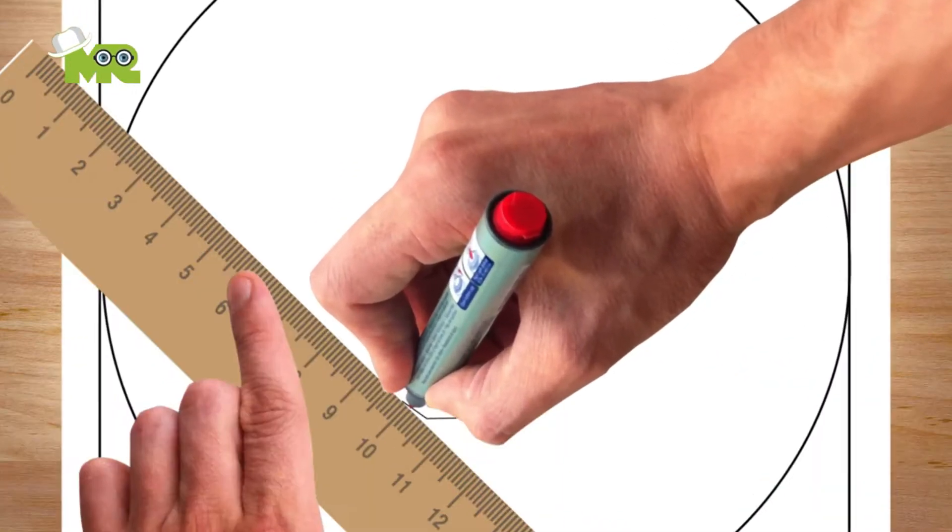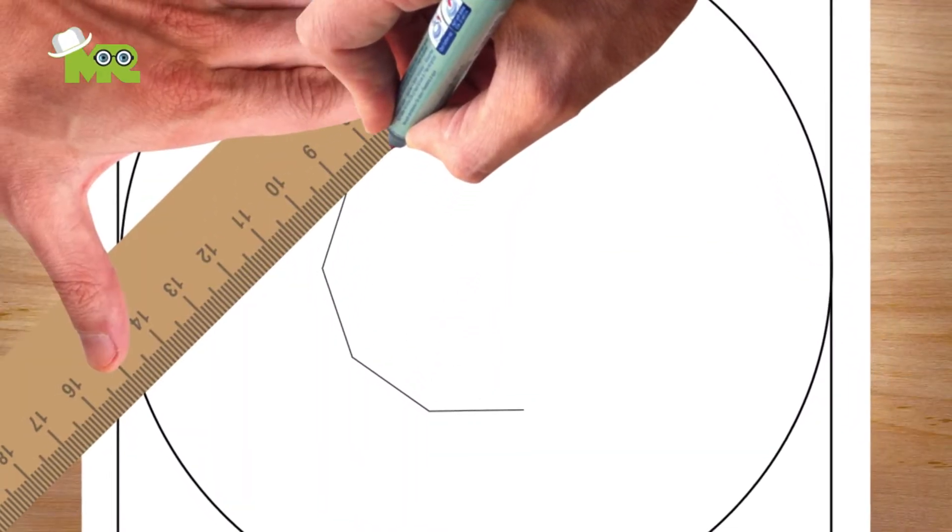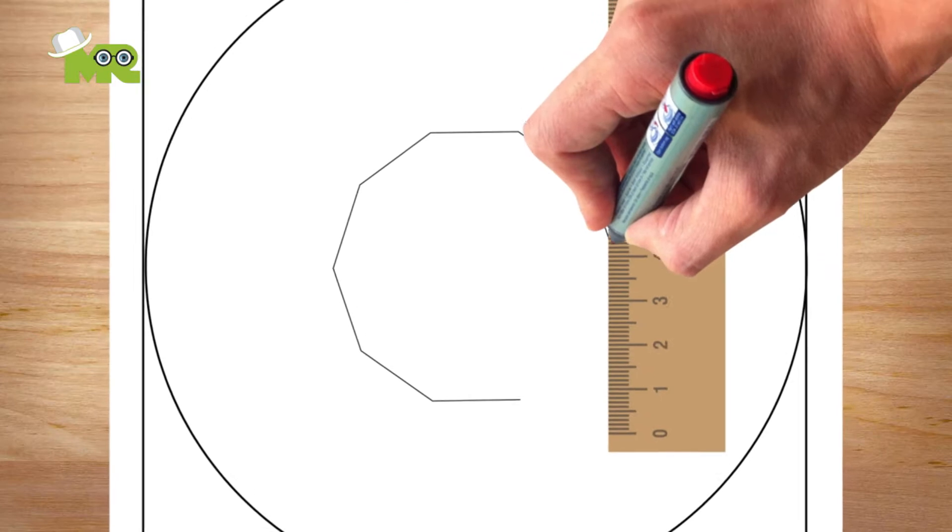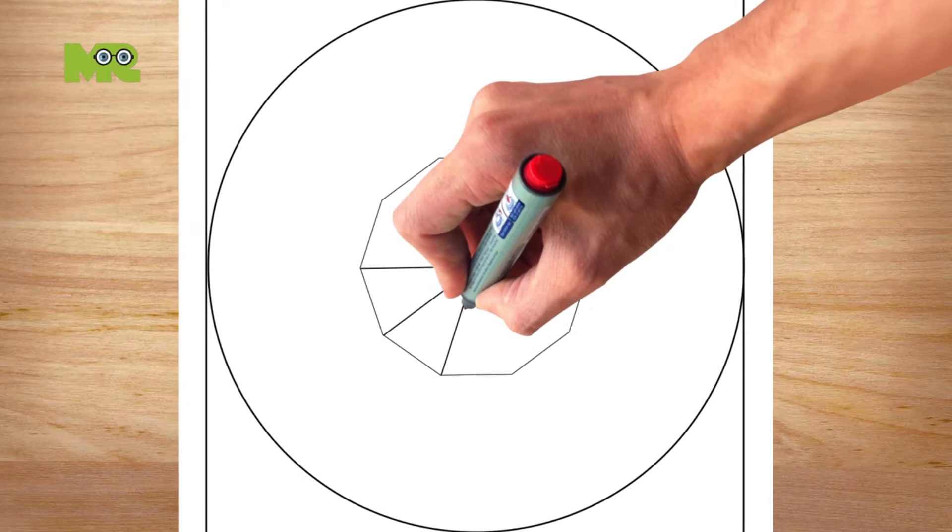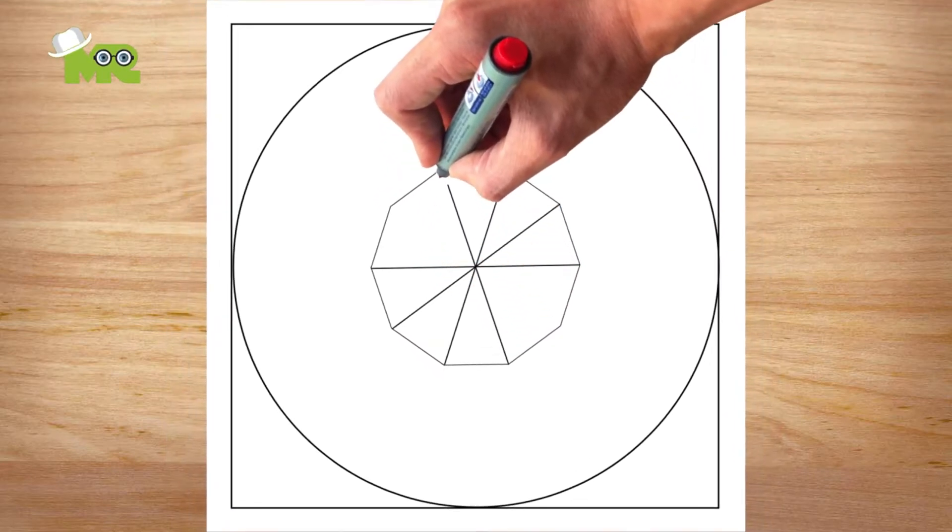Now in the center, draw a small decagon with 10 sides and 10 angles. Inside this small decagon, make 10 equilateral home triangles.